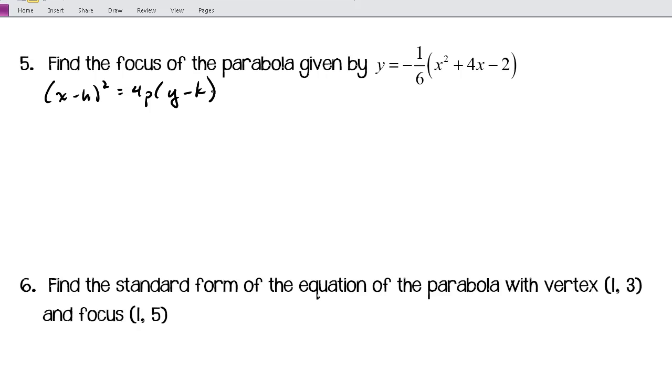I think the first thing that I'm going to do here is multiply through by negative 6 to get rid of that one-sixth. So I end up with negative 6y equals x squared plus 4x minus 2. I'm going to flip-flop everything because I like my squared stuff on the left. So x squared plus 4x minus 2 equals negative 6y. All I did was flip-flop the two sides.